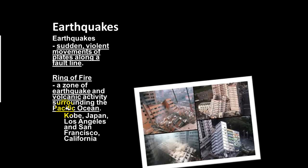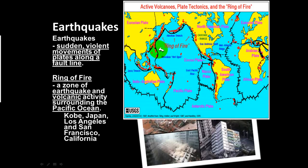Earthquakes are violent movements of the Earth, caused by land along fault lines shifting. When the land riding on the plates on top of the magma shifts, you can have earthquakes. These are sudden and violent movements of the plates along a fault line. The Ring of Fire is a name scientists have given to a zone of earthquakes and volcanoes that surround the Pacific Ocean, going from Kobe, Japan to Los Angeles and San Francisco.